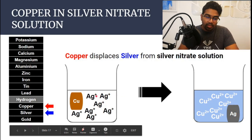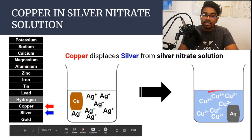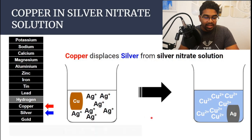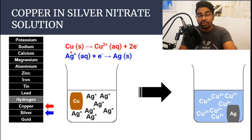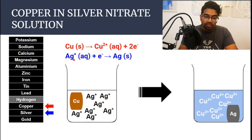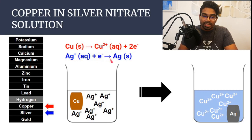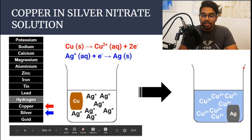Copper becomes Cu²⁺ ions, and Cu²⁺ ions are blue, so the solution turns blue. The observation is that the colorless solution turns blue due to the copper 2+ ions. Looking at the half equations: copper is more electropositive, so it has a higher tendency to donate electrons — copper donates two electrons to become Cu²⁺. Silver gains the electrons lost by copper and is displaced as silver solid, which is why we observe a shiny gray deposit around the copper.